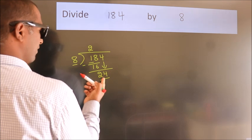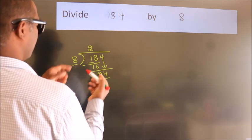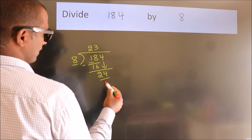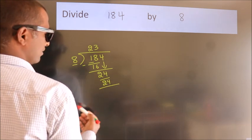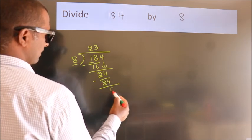When do we get 24 in the 8 table? 8 times 3, 24. Now we subtract. We get 0.